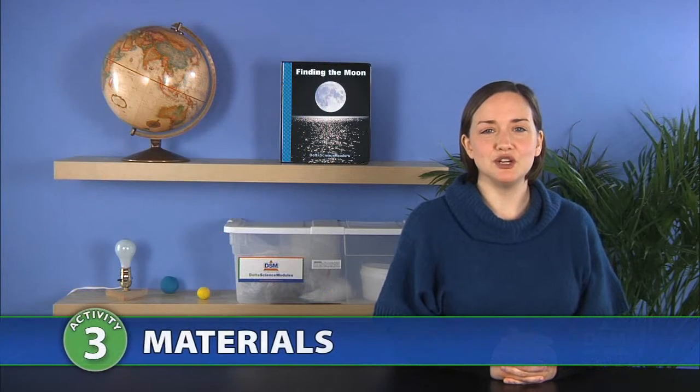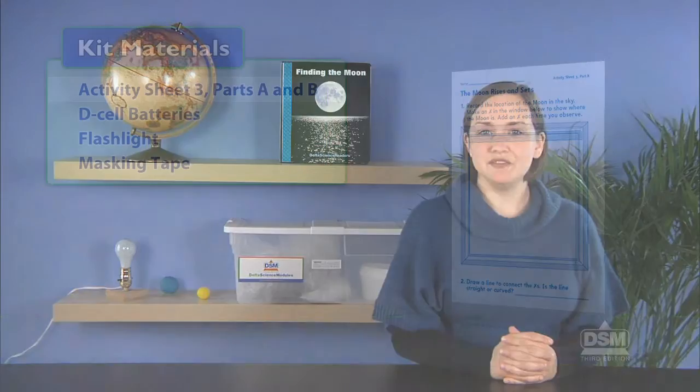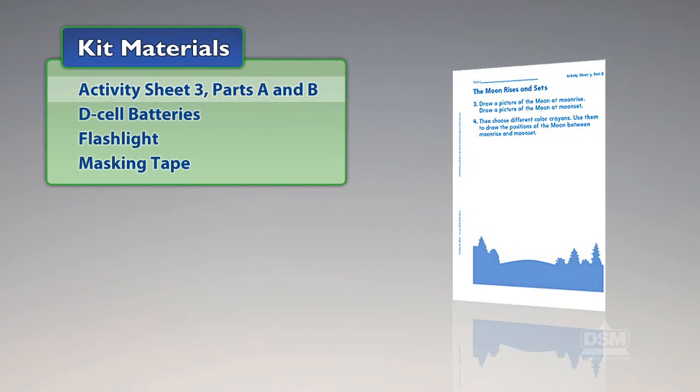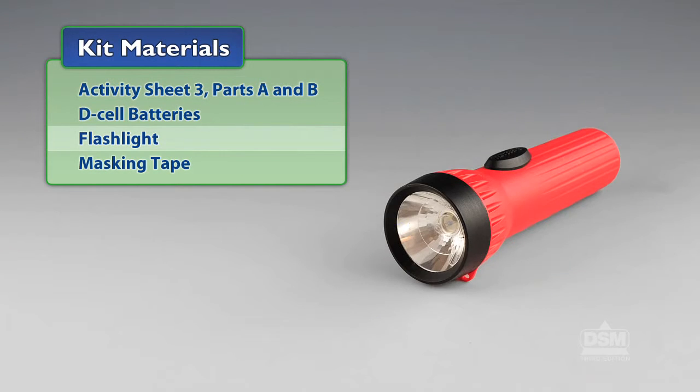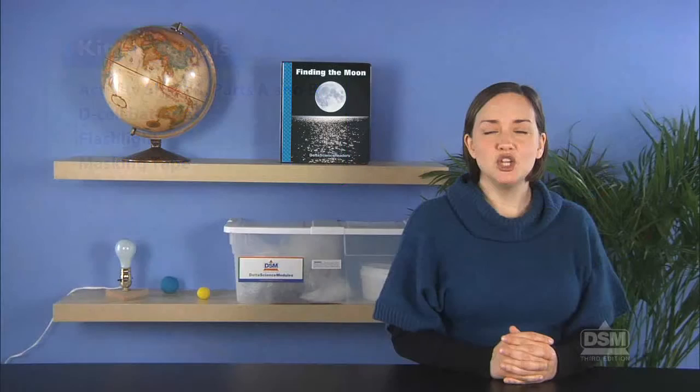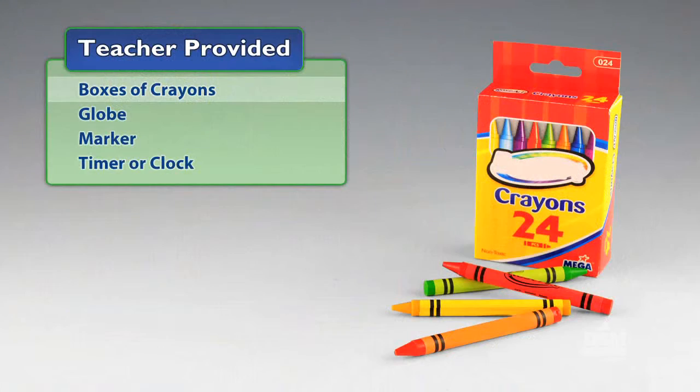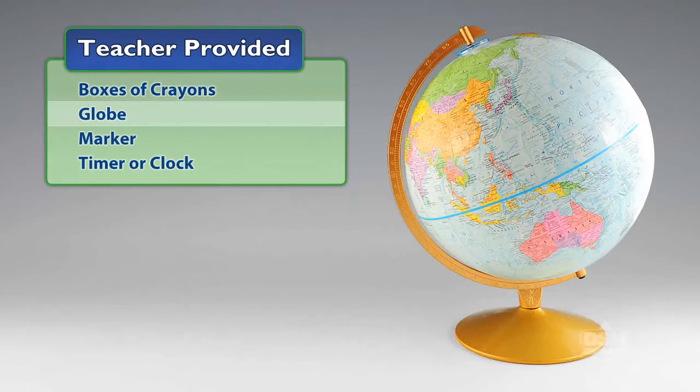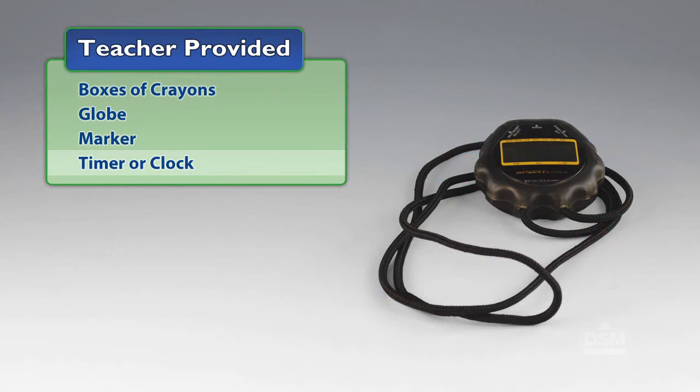You will need the following materials from the kit: Activity Sheet 3 Parts A and B, D-cell batteries, flashlight, and masking tape. You will also need to provide boxes of crayons, a globe, a marker, and a timer or clock.